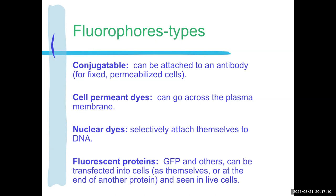Nuclear dyes are their own category of fluorophores because it's so important to see the nucleus. Everything that's alive has DNA or RNA — nucleic acids. There's just so much information in looking at the DNA. So there's a whole series of dyes that specifically label the nucleus. Almost always, if you're going to bother to prepare your specimen and look at other things, you're almost always just going to add DAPI to your specimen so you can kind of see where the nucleus is, what's going on — is it the right shape, is it a healthy cell, et cetera.